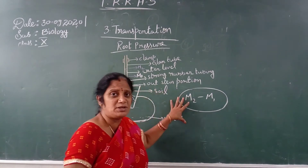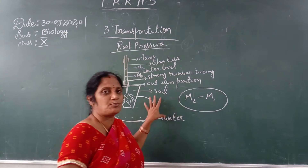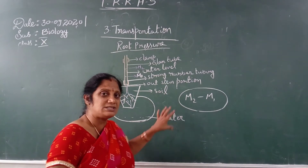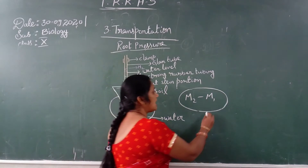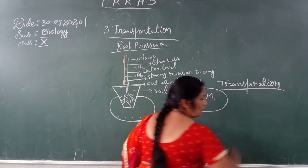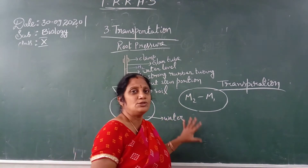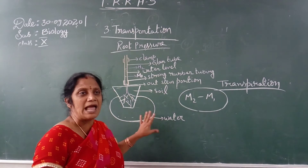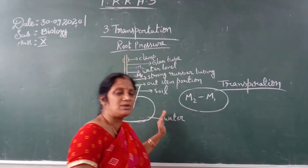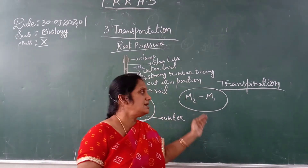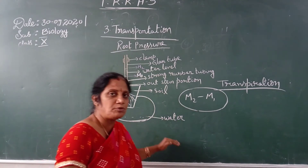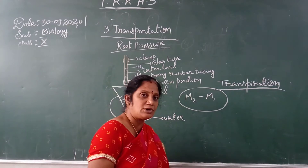What is the process that helps tall plants transport water to their topmost parts? The water comes out from the leaves in the form of water vapor — this process is called transpiration. Transpiration is the process through which water from the plants is removed in the form of water vapor. Both transpiration and root pressure together help in transporting water and minerals from the root level to the shoot level.